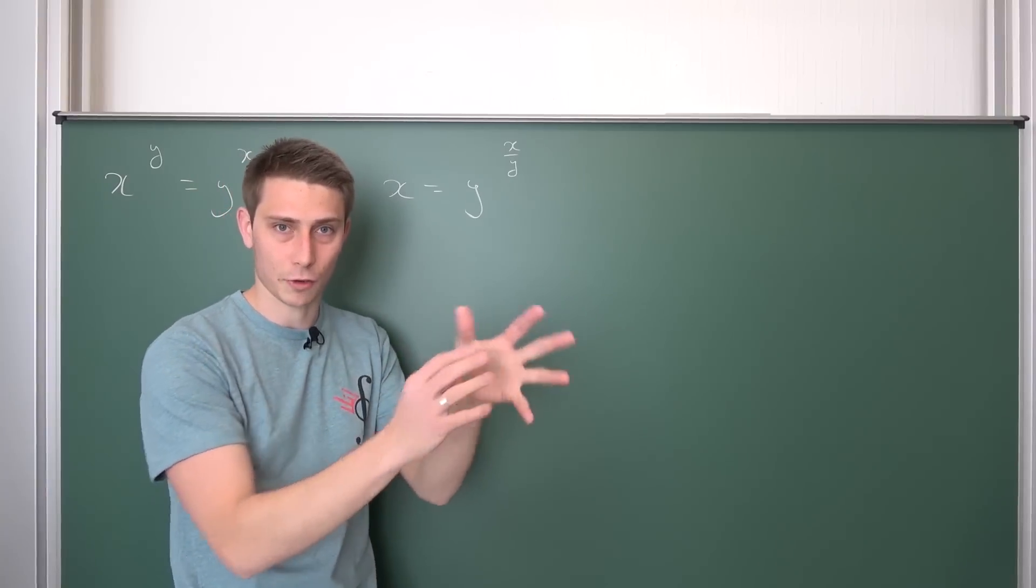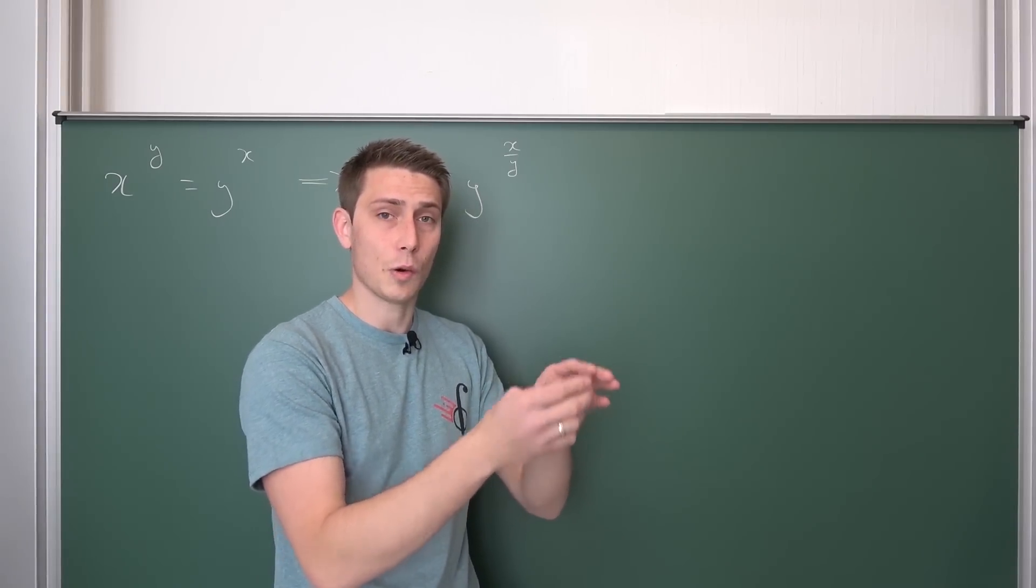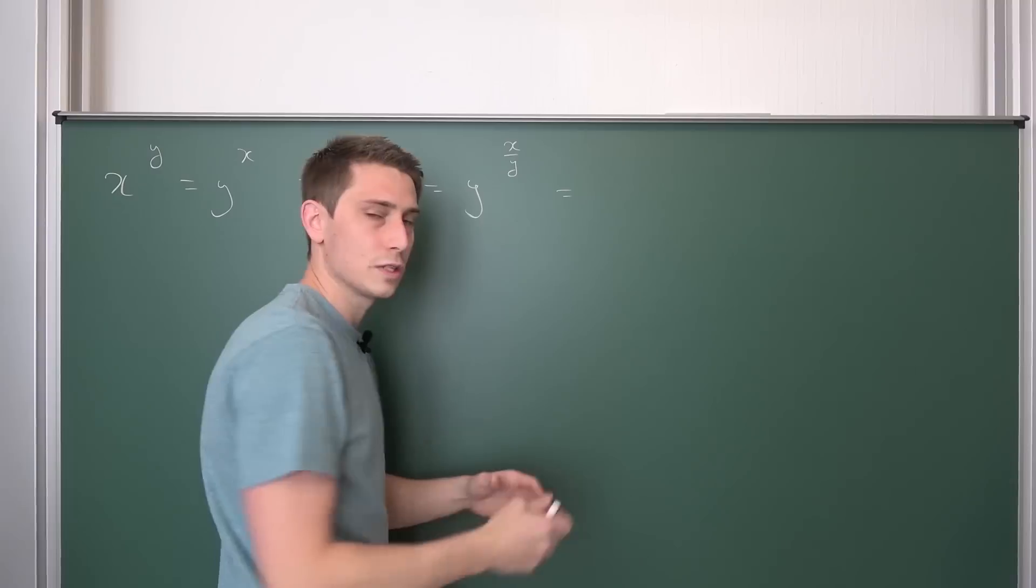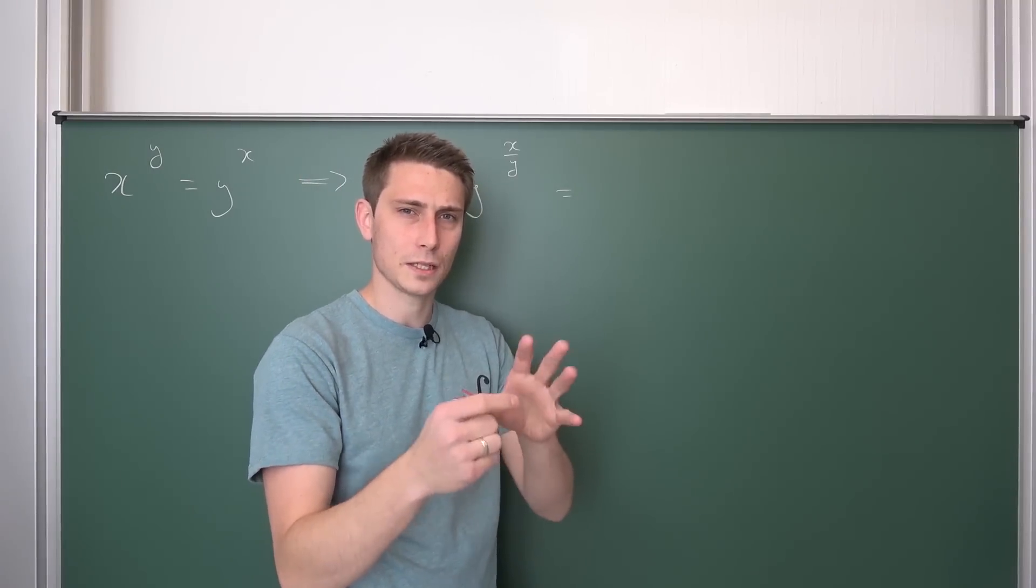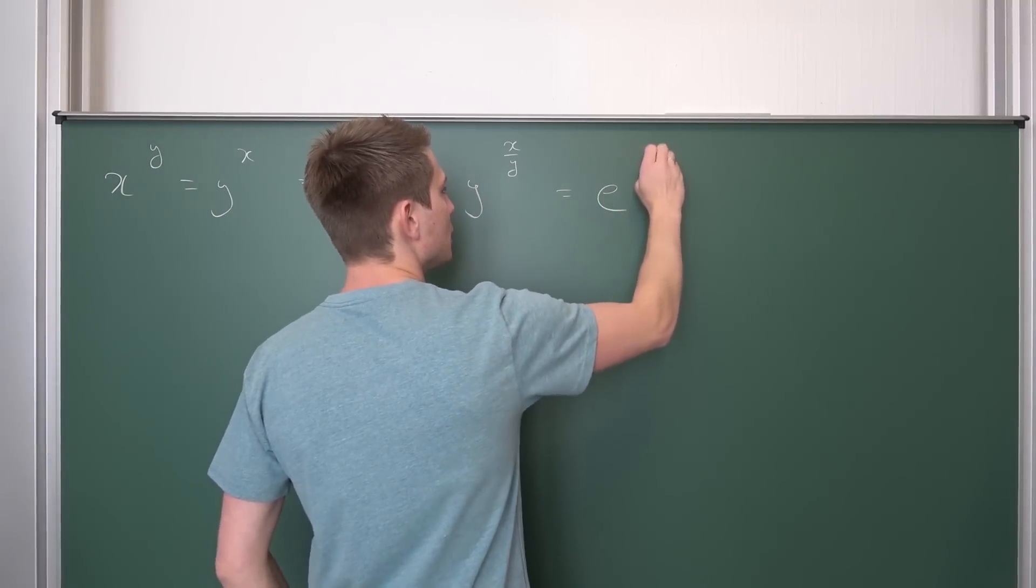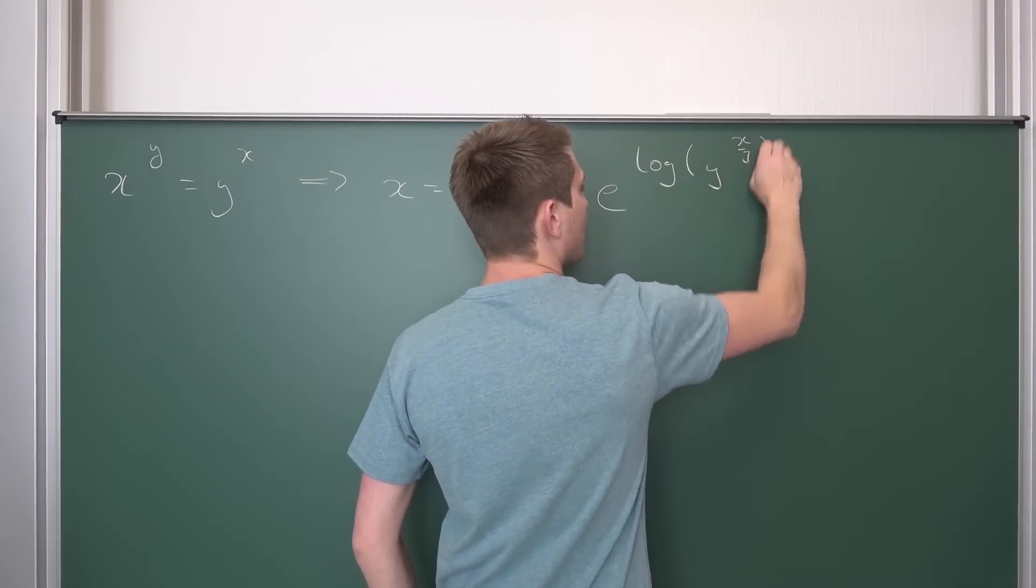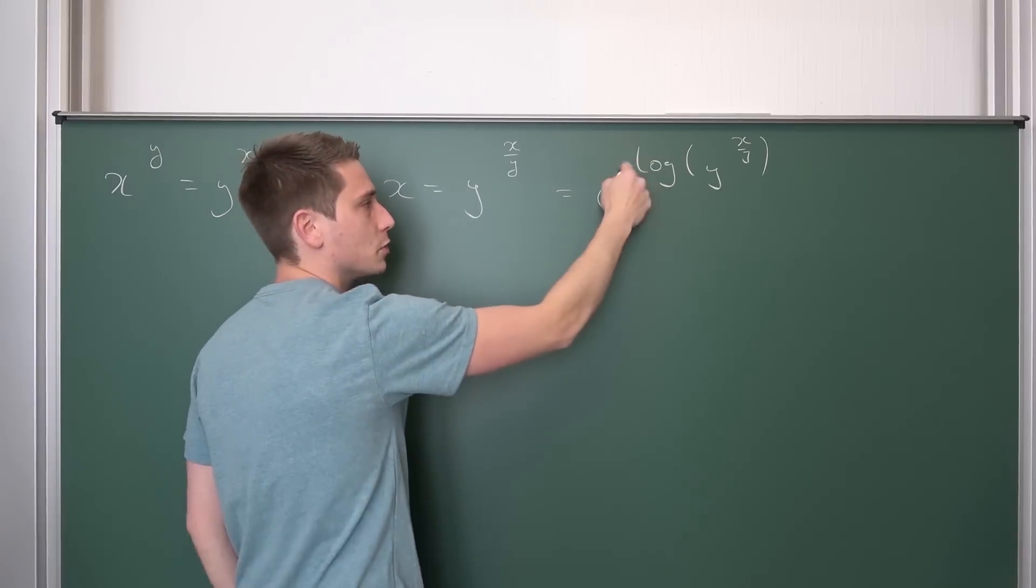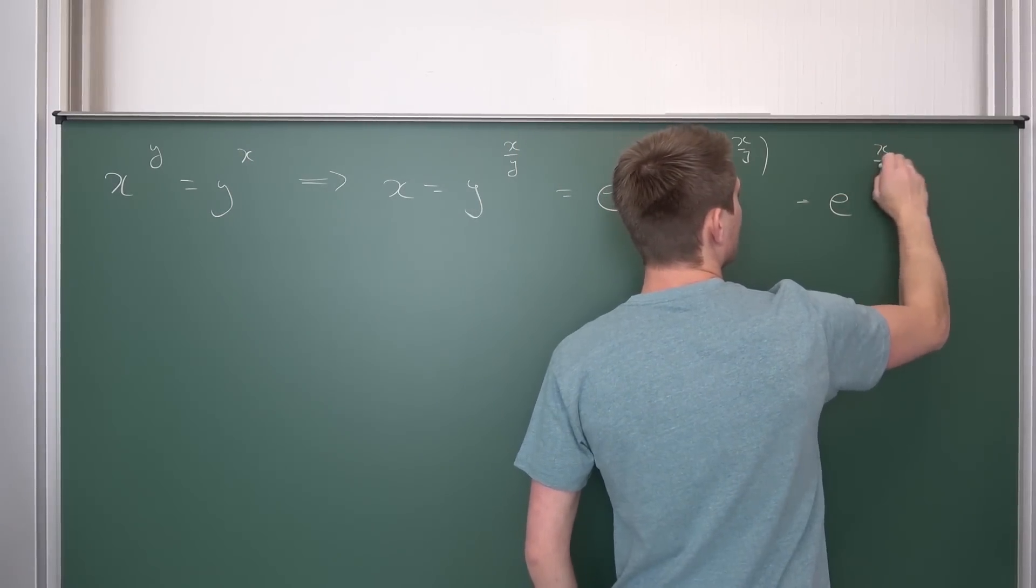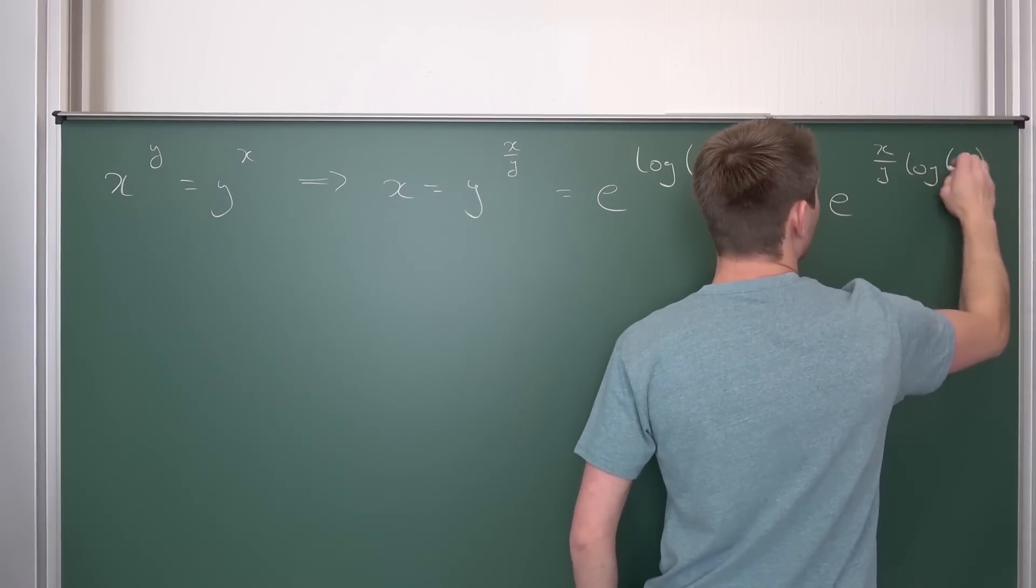We want to turn this into some kind of exponential function. If you have a to the b, that's the same as e to the ln of a to the b. You can bring the b to the front to turn this into e to the b times ln of a. Same spiel here. We are going to turn this into e to the natural log of y to the x over y. And now we can bring this x over y, this exponent to the front, turning this into e to the x over y times logarithmus naturalis of y.